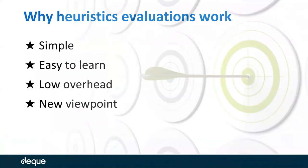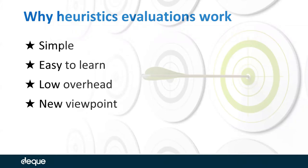The reason why heuristic evaluations work is because they're very simple to do — anyone can get up to speed in a very short amount of time. By nature they are subjective, but then again, so is usability in general, and to a certain extent, so is accessibility as well. They're easy to learn and have a pretty low overhead. You don't have to plan much in advance, and they create new viewpoints on user interface elements or particular interactions, helping you discover new perspectives based on what kind of user you're thinking about.